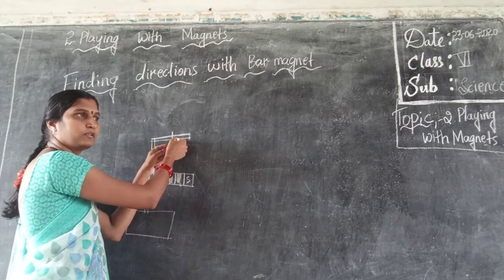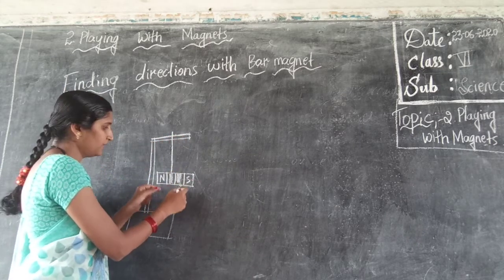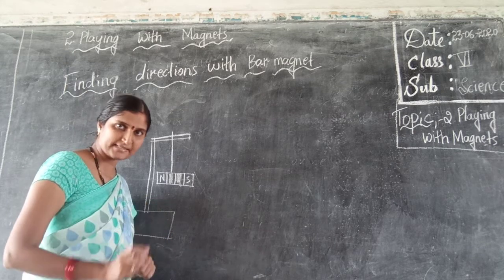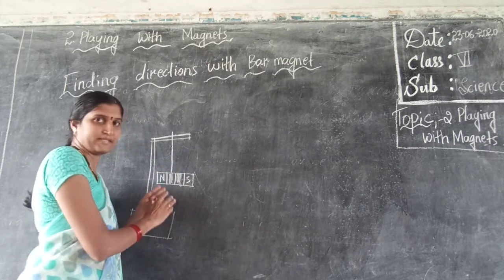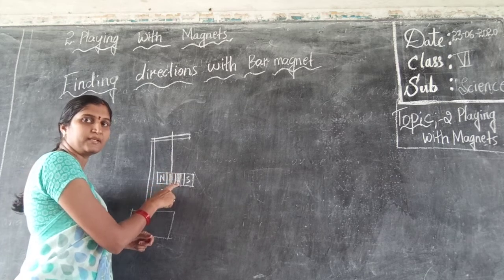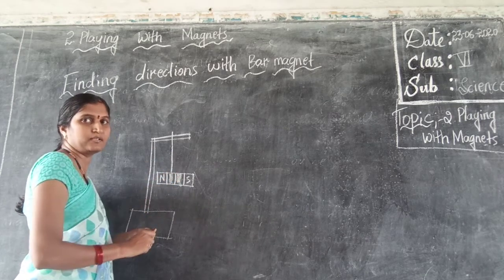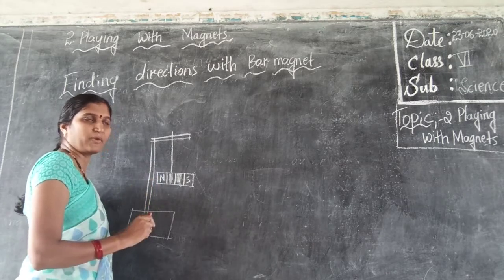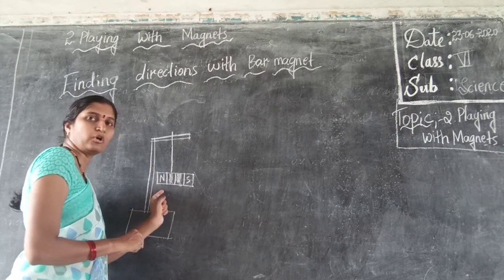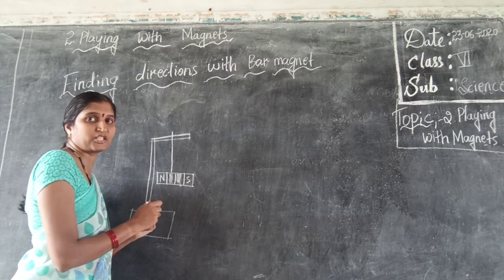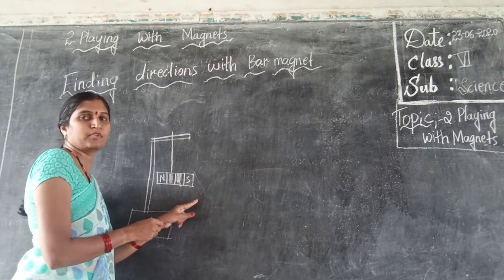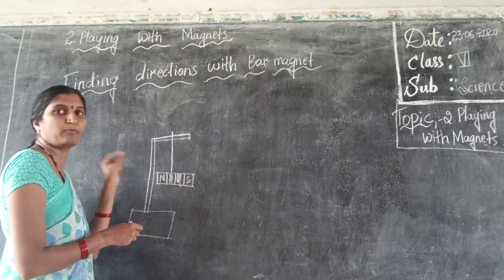After tying the magnet to the thread on the strand, leave it as it is. It will move somewhat — keep it in a place and leave it to rest. After leaving it to rest, this bar magnet comes to rest and stops its movement. When it stops, it shows the direction of north and south. See what is written on the bar magnet — where is north and where is south. You can find the direction with the help of this bar magnet.